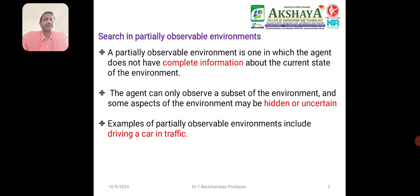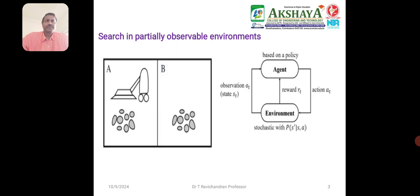The agent can only observe a subset of the environment. Some aspects of the environment may be hidden and unconstrained. Examples of partially observable environments include driving a car in traffic — the car cannot observe any accidents, traffic signals, or problems in advance. Another example is room cleaning robots. The robots clean room A and room B, but cannot know the conditions in room B until they move there and observe whether any dust is present before taking action.